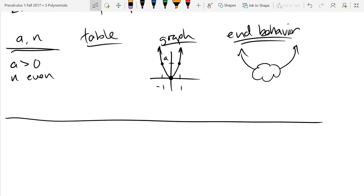So that's with positive and even. Now we'll go negative even. So the way to think about even is the ends match. They're both up in the positive case, and in this case, they're both going to be down. And we'll see that by making our table.